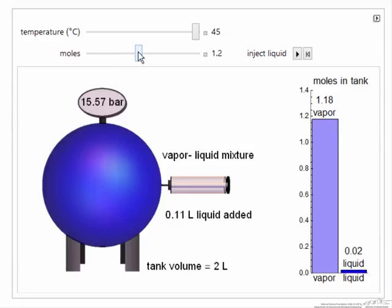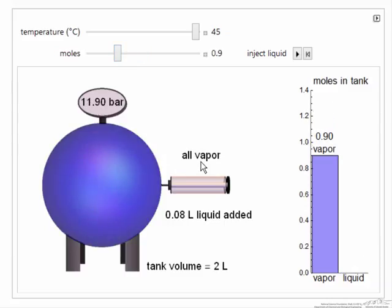Indeed, if I were to decrease the number of moles further, we would no longer have vapor-liquid equilibrium. We have just vapor in the tank. We have not added enough moles to fill this entire volume with vapor and be at saturation pressure, so it will be below saturation pressure for this temperature.